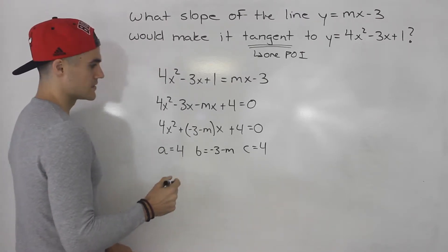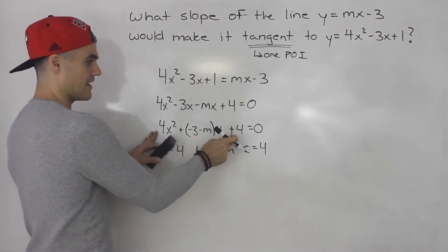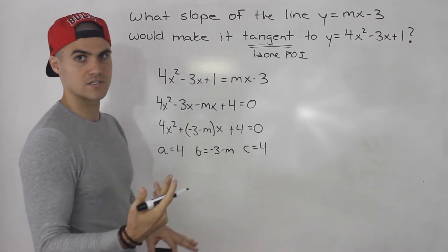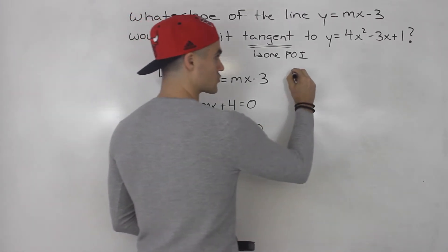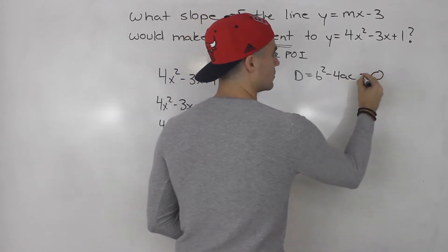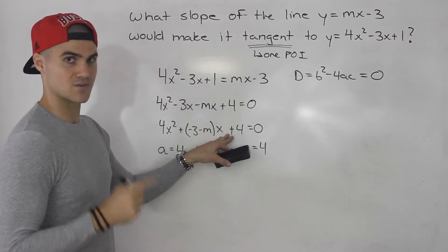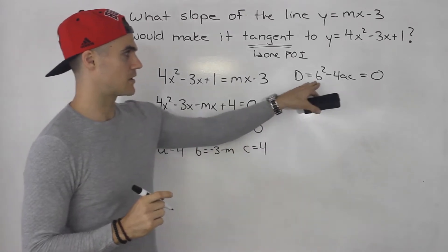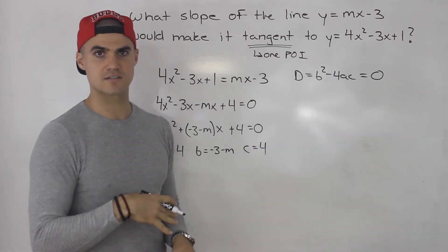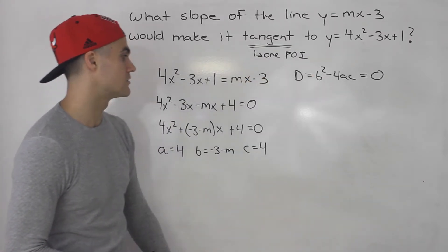Does that make sense? So if there's only one point of intersection, then that means this quadratic is only going to have one solution. And if a quadratic equation has one solution, that means the discriminant — which is equal to b squared minus 4ac — has to equal 0. If it's greater than 0, there's two solutions. If it's less than 0, there's no solutions. But we want one solution — one point of intersection — so the discriminant has to equal 0.